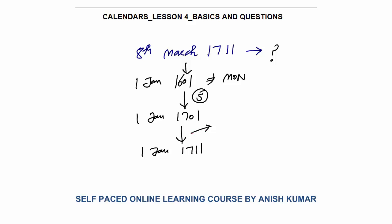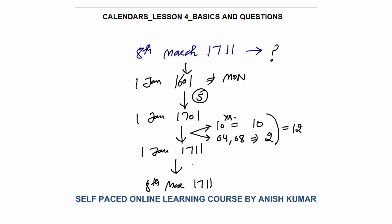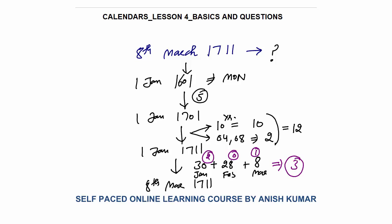Now move to 1st January 1711 — a 10-year gap. In 10 years there will be 10 straight odd days, plus extra odd days for leap years. How many leap years? 1704 and 1708 — there will be 2 leap years, so 2 extra odd days. Total: 12 odd days from 1701 to 1711. Now move straight to 8th March 1711: January has 30 days remaining after Jan 1, February is 28 days (non-leap year), and March has 8 days. Odd days: 30÷7 remainder 2, 28÷7 remainder 0, 8÷7 remainder 1. So 2+0+1 = 3 odd days.